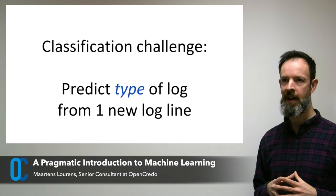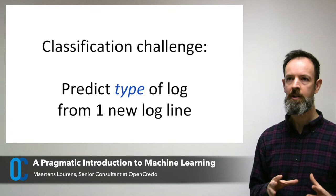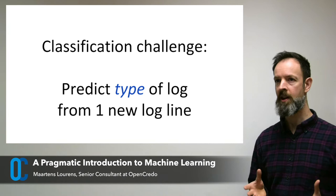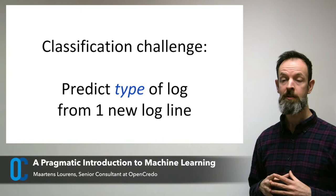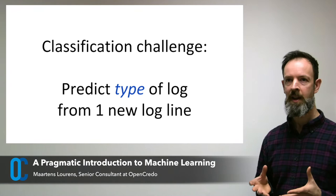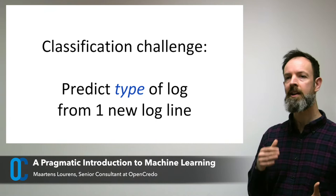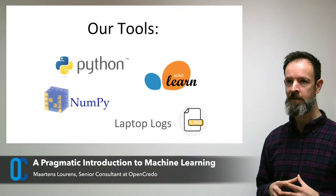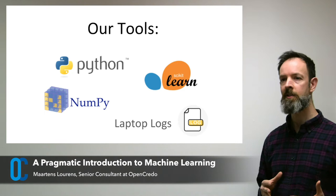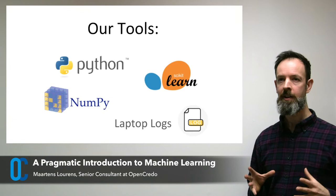The problem we are going to use for our demonstration today is a classification challenge: can you predict the type of log — whether it's a system log, a Wi-Fi log, etc. — based on looking at just one new line from a log? To do that, we are going to train our machine learning process on logs from your laptop, and then use a percentage of those not used for training to see if we can make correct predictions.